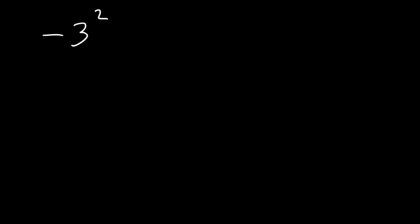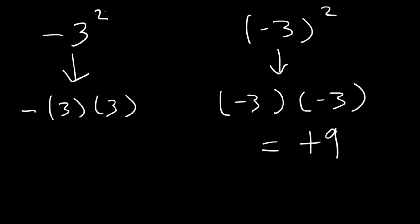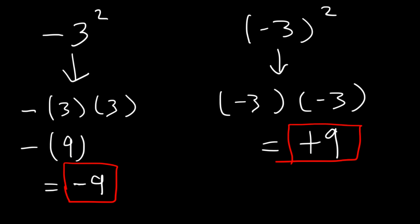What is the value of negative 3 squared? What about negative 3 squared within parentheses? With parentheses, it's negative 3 times negative 3, which equals positive 9. Without parentheses, we have 1 negative sign and the exponent only applies to the 3, not the negative sign — so 3 times 3 is 9 and the answer is negative 9. You can confirm this in a calculator: typing negative 3 squared gives negative 9, but typing it in parentheses gives positive 9.